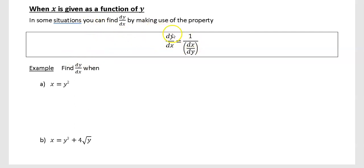So one result which is very useful to us, dy by dx is equal to the reciprocal of dx by dy. So if, for example, a function is given in terms of y, you could maybe find dx by dy, and then you could reciprocal that to find what dy by dx is.